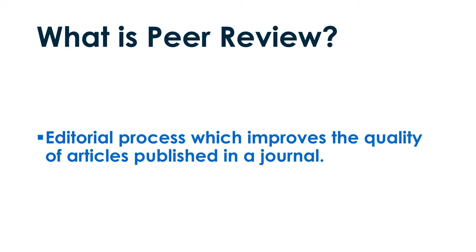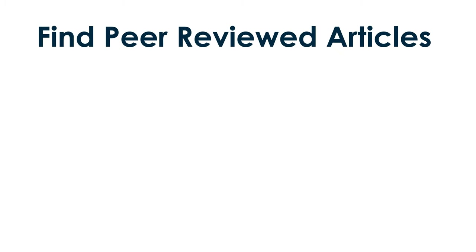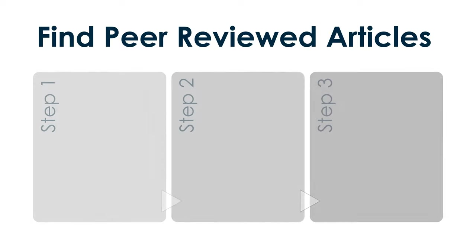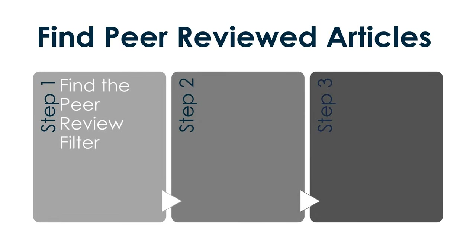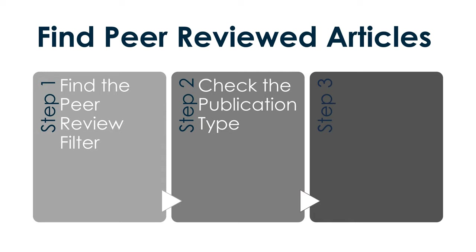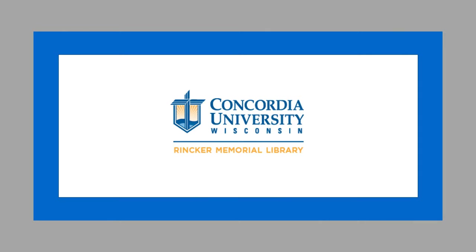To recap, peer review is an editorial process which improves the quality of articles published in a journal. There are three steps to find peer-reviewed articles in the library: find the peer review filter, check the publication type if you need scholarly journals, and check the article type to avoid book reviews and commentaries which are not peer-reviewed. Thank you for watching this Rinker Memorial Library tutorial.